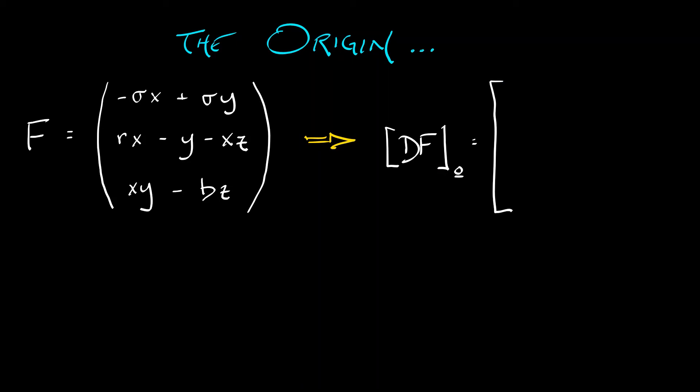So, going by rows, the first row is minus sigma, sigma, zero, the second row is r, negative one, zero, and the third row is zero, zero, minus b. This is really nice, because it's got a block diagonal structure.